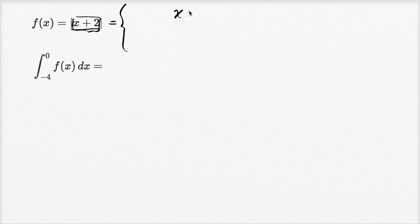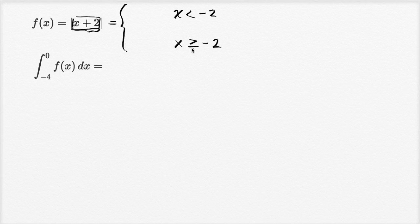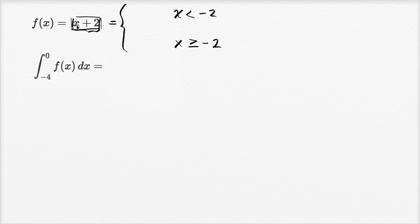Let's consider the intervals x less than negative two, and x greater than or equal to negative two. This could have been less than or equal, in which case the other would be greater than — either way it equals this absolute value. This is a continuous function. When x is greater than or equal to negative two, then x plus two is going to be positive, so the absolute value of it is just x plus two.